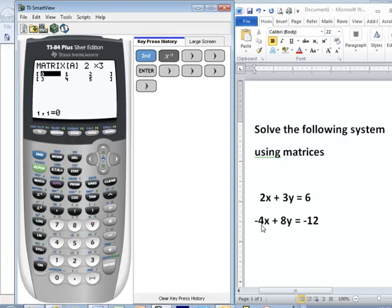Two, three, and six for the first equation. Negative four, eight, negative twelve for the second equation.